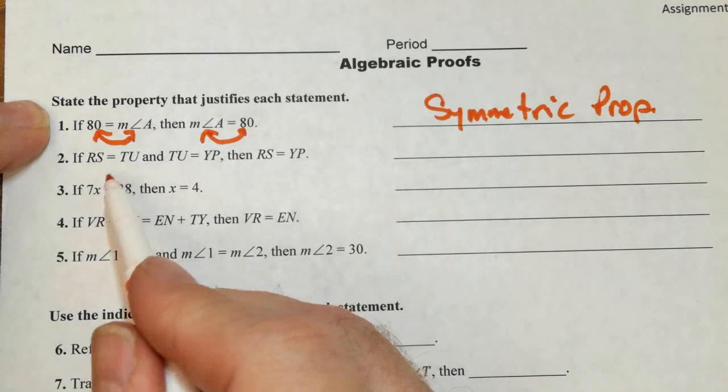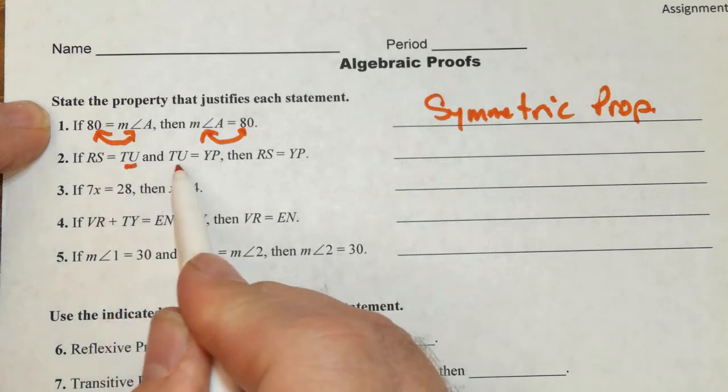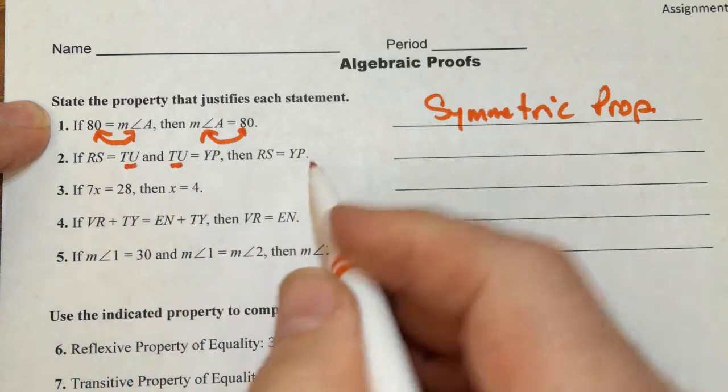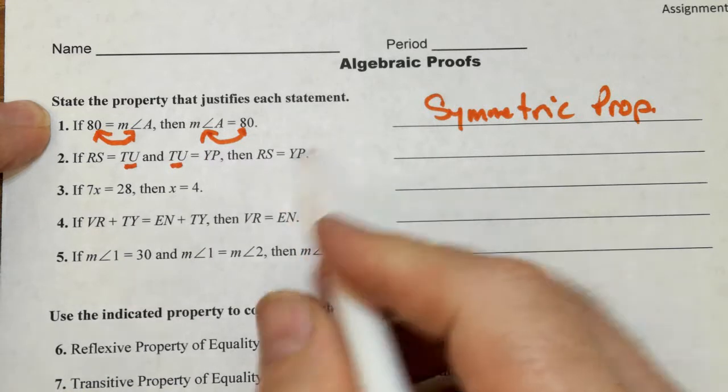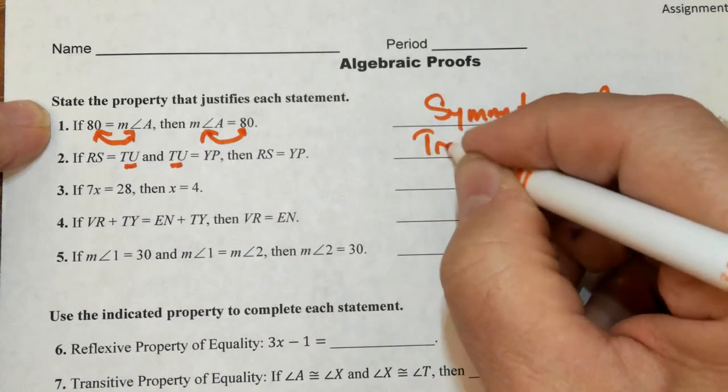Next one. If RS equals TU and TU equals YP, then RS equals YP. Well TU is my middleman. This is transitive property.